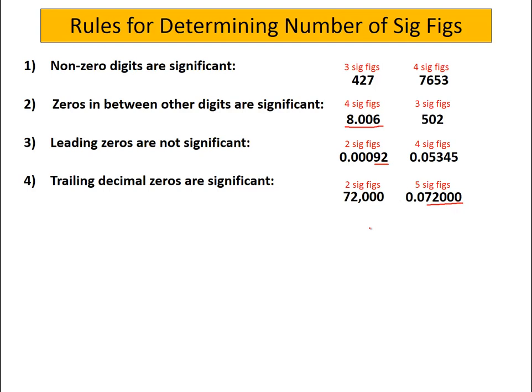However, if it's not a decimal representation, then we would say we don't really know anything about those. They're just telling us about the order of magnitude. So 72,000 - these zeros are only telling us about the order of magnitude of the measurement, they're not necessarily about the precision. So we'd say there's only two significant figures in this number.